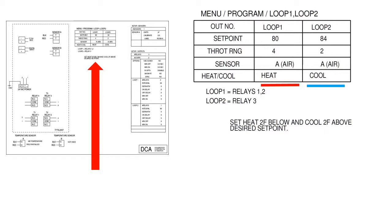The loops must remain as they are. Changing loop 1 to cool would only mean, for example, that a furnace is being activated in an attempt to cool the room. If you need to change the setpoints, the instructions can be found in the DCA installation manual on our website, or you can call DCA. Let's get started.